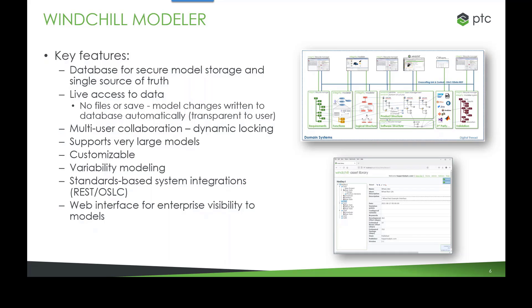We have dynamic locking to support multi-user collaboration. When you access parts of a model, it becomes locked for editing to you and other users cannot make changes. There's no need to check out items — you don't click an edit button. Selecting or opening something tells Modeler you might make a change, so locking is fine-grained, dynamic, and transparent to the user.